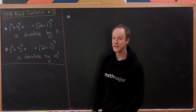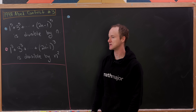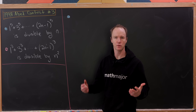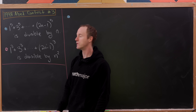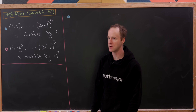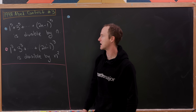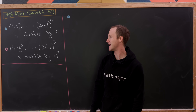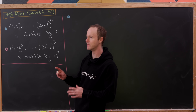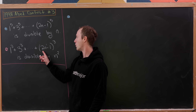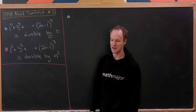Today we're going to look at a nice problem from the Norwegian Math Olympiad, also known as the Abel contest after the mathematician Abel, who is Norwegian. This is from 1998 and it's a two-parter. First we want to show that if you sum all of the fifth powers of odd numbers from 1 to 2n minus 1, you get something divisible by n. Then we'll show a similar result summing the cubes from 1 to 2n minus 1, getting something divisible by n squared.